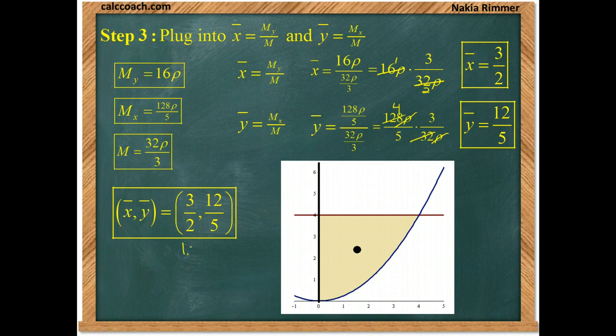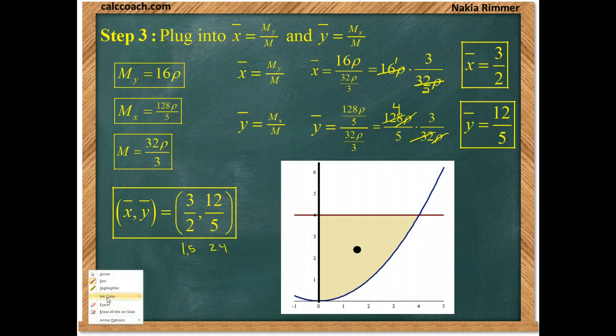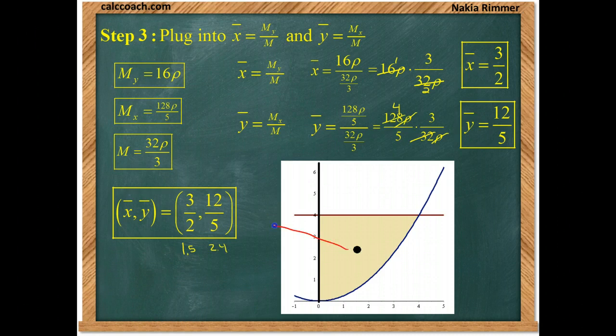Right, 1.5. And this guy is 2.4. So, I just kind of guesstimated as to where that would fall at. And this guy here is called the center of mass. This is the coordinates for it here. And that's where it would be plotted at.